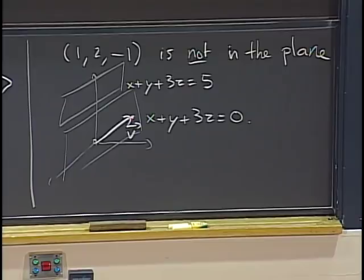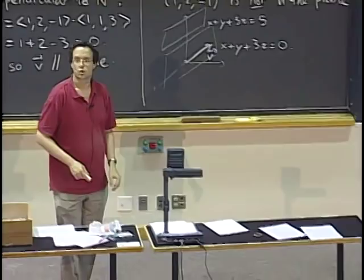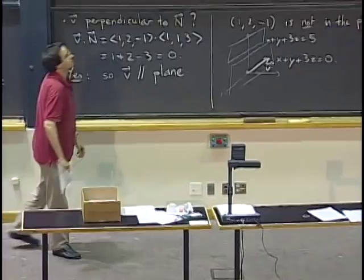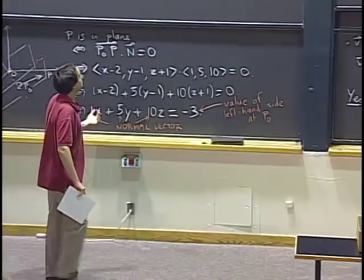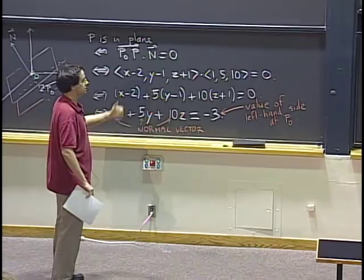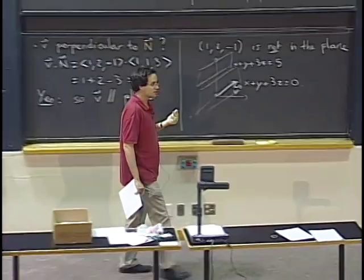Last time we learned about matrices and linear systems. Let's think about linear systems in terms of equations of planes and intersections of planes. A three-by-three linear system consists of three equations, and each equation is the equation of a plane. Solving the system means finding a point that lies on all three planes simultaneously.